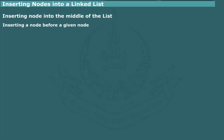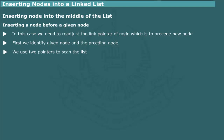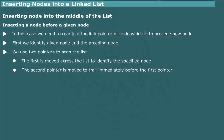The reason is that, in placing a new node in the correct position, we need to readjust the link pointer of the node which is to precede the new node. Thus, we have to identify not only the given node but also the node that precedes it. For this purpose, we use two pointers to scan the list. The first pointer is moved to identify the specified node, while the second pointer trails immediately before the first. When the first pointer ultimately reaches the given node, the second pointer will point to the preceding node. We then use the second pointer to adjust the link pointer of the preceding node to point to the new node.